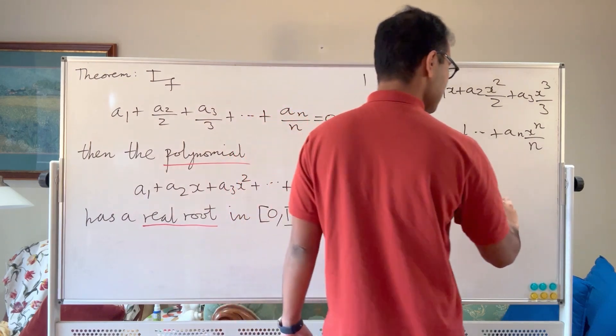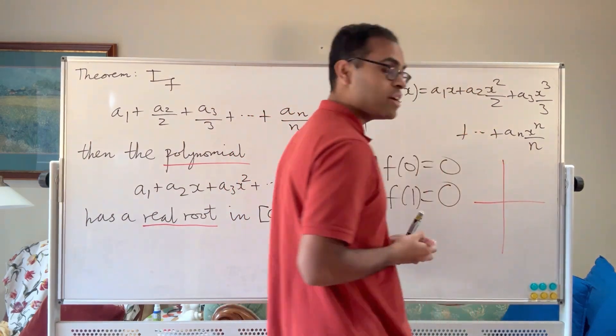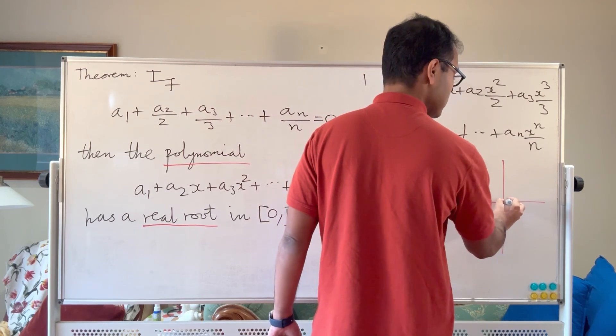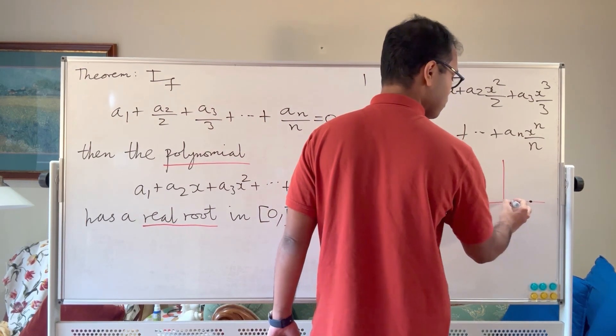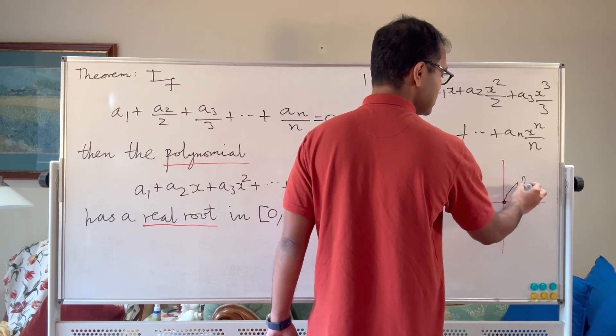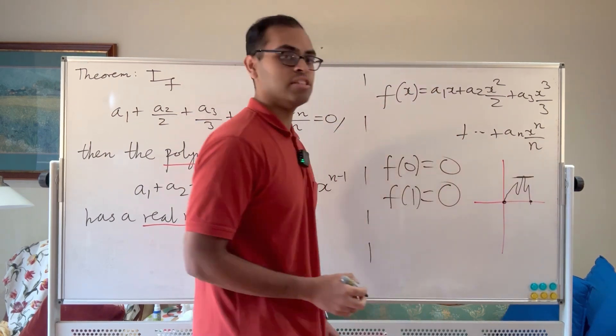So then we know there is going to be some point, and this is just Rolle's theorem, there's going to be some point where the derivative is equal to 0. If its value at 0 and its value at 1 are both 0, what goes up must come down. So whatever it does, because it's differentiable, at some point its derivative has to be 0.